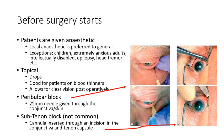Topical drops are always applied and these are really good for patients on blood thinners, and they allow for clear vision post-operatively. Sometimes a patient is given either a peribulbar block or a subtenon block. The subtenon block is not common — it's usually the peribulbar block, where a 25-millimeter needle is given through the conjunctiva and the skin, as shown on the left. So if the patient is not given a general anesthetic, they'll usually get a peribulbar block together with topical drops.